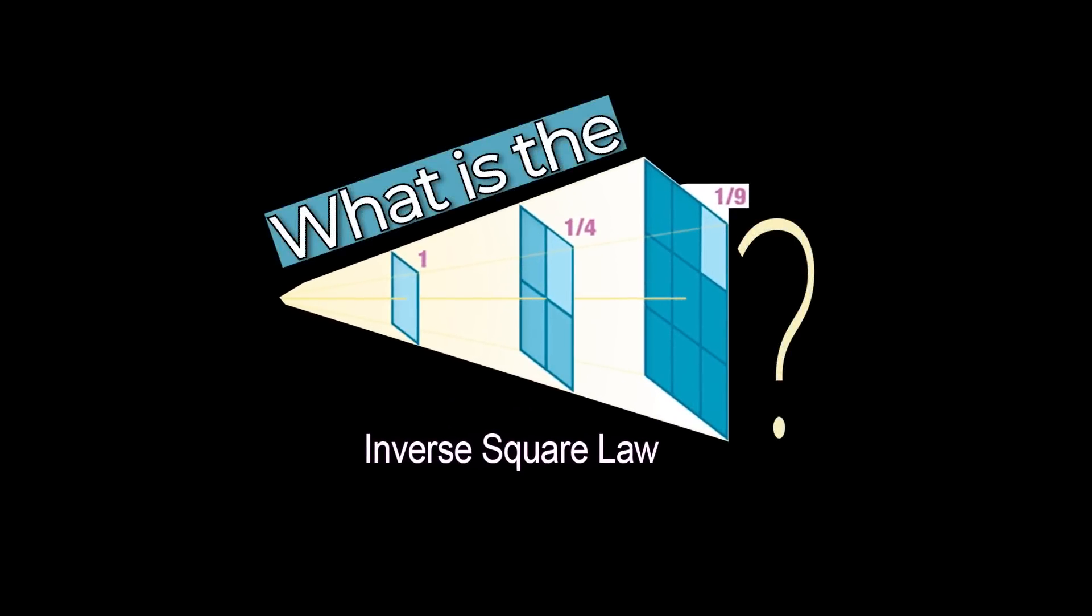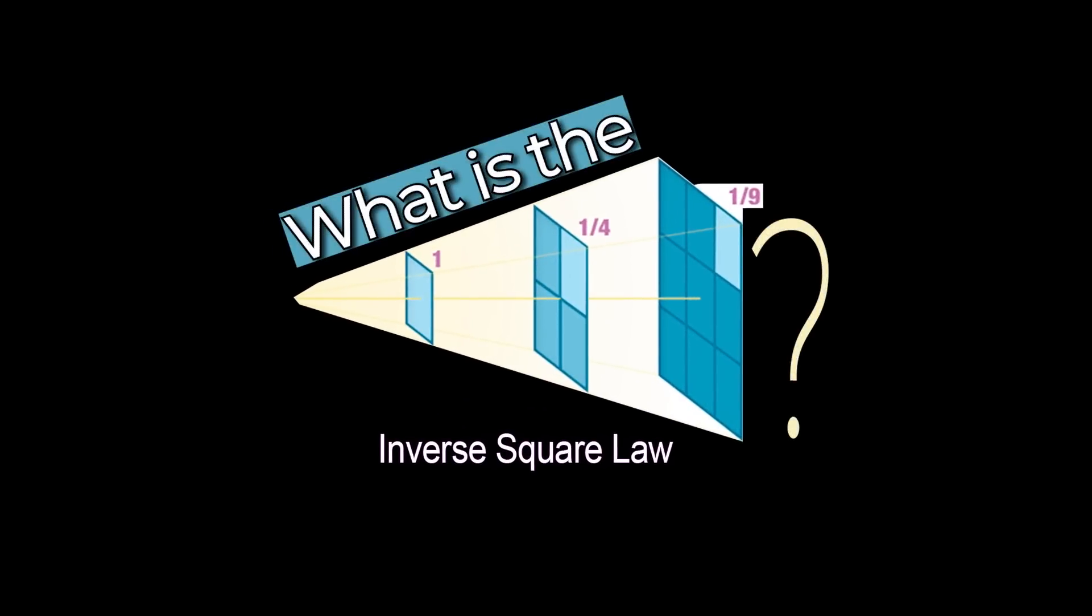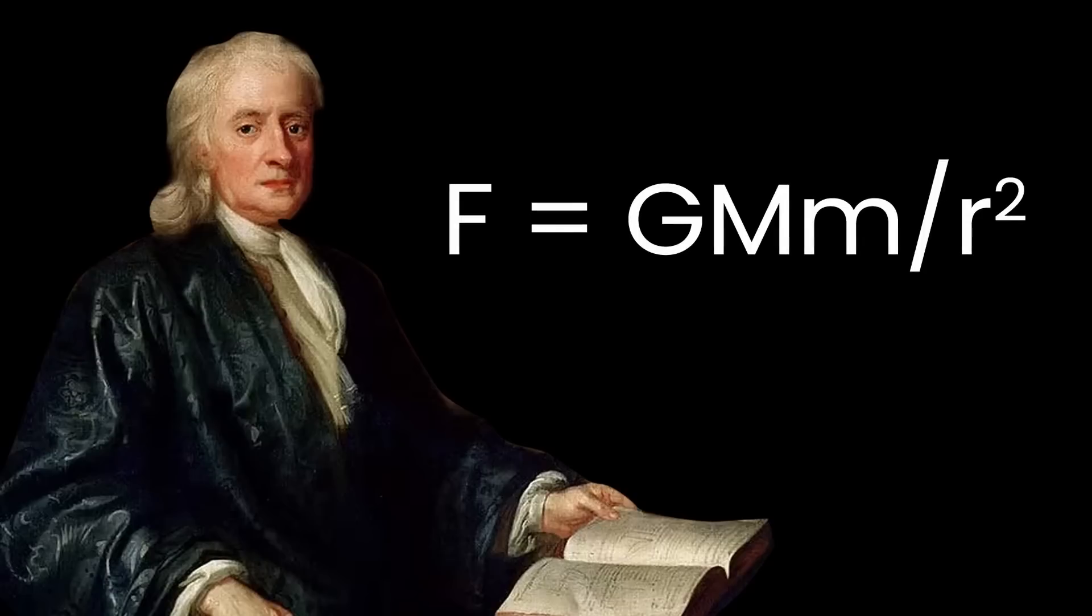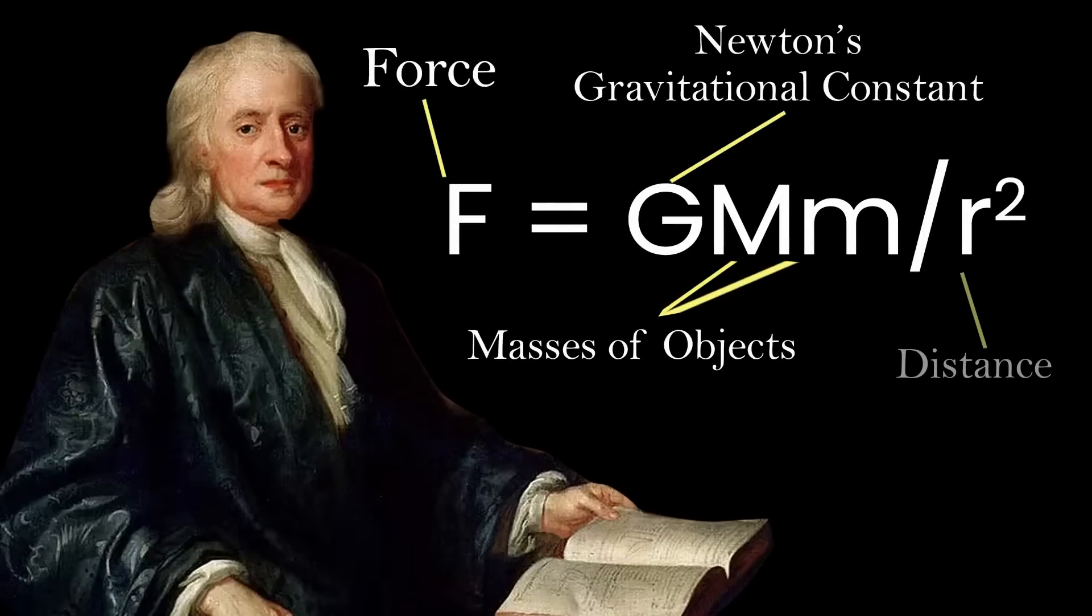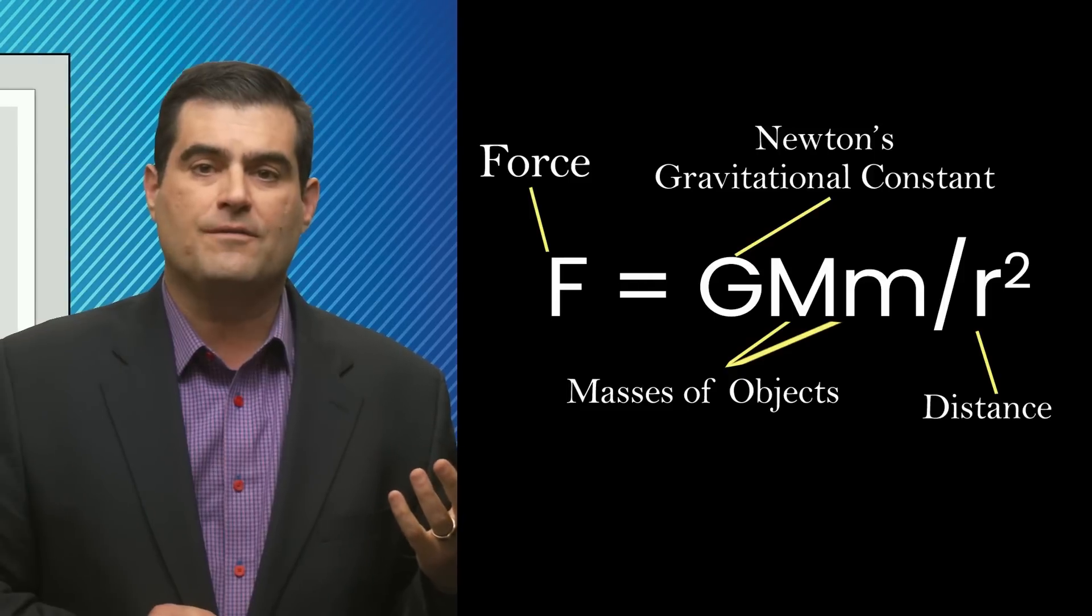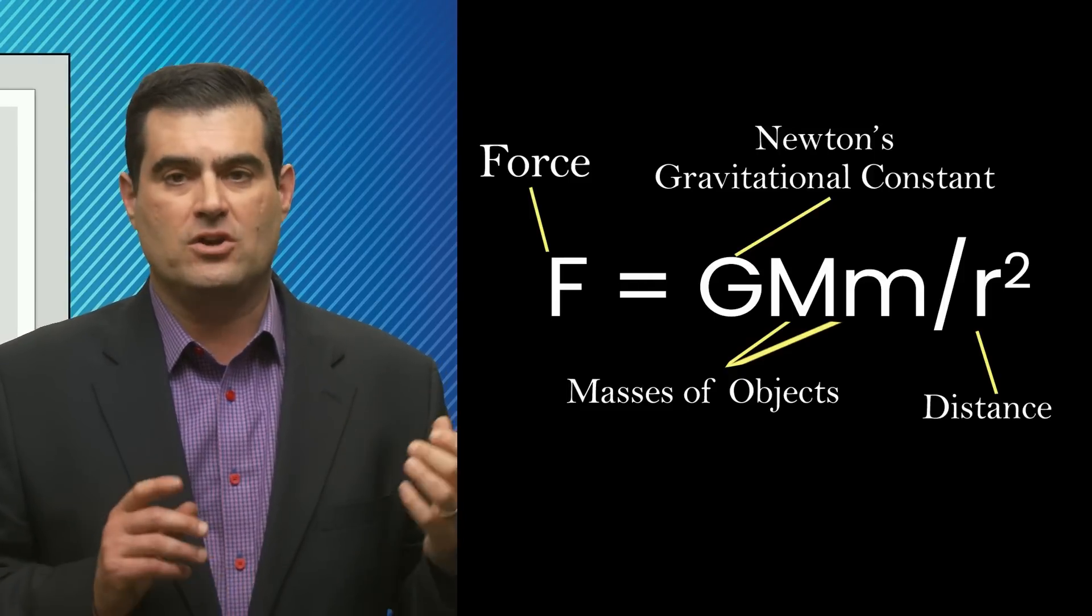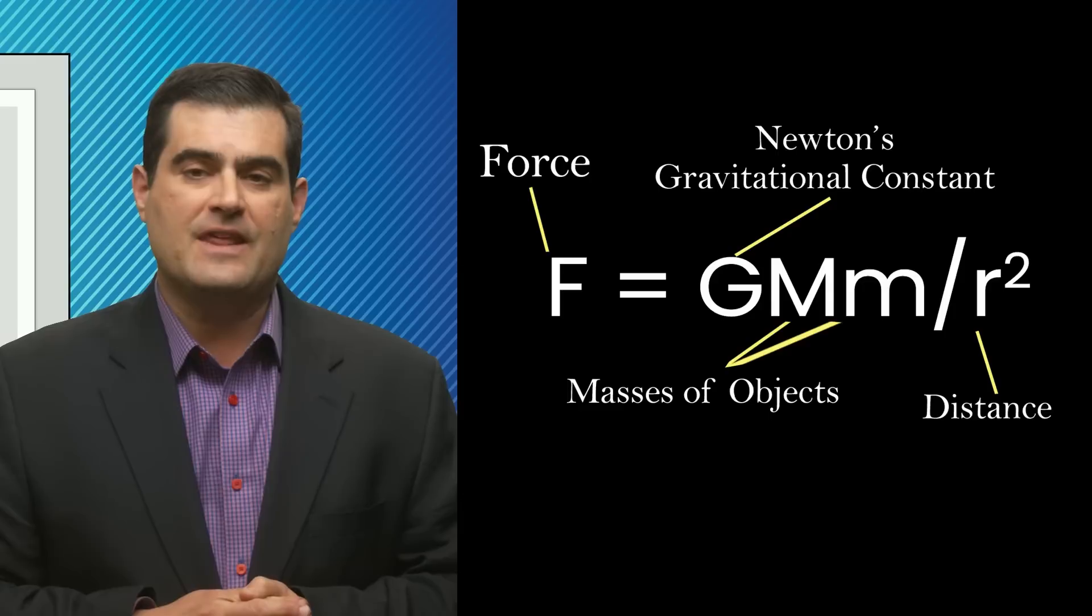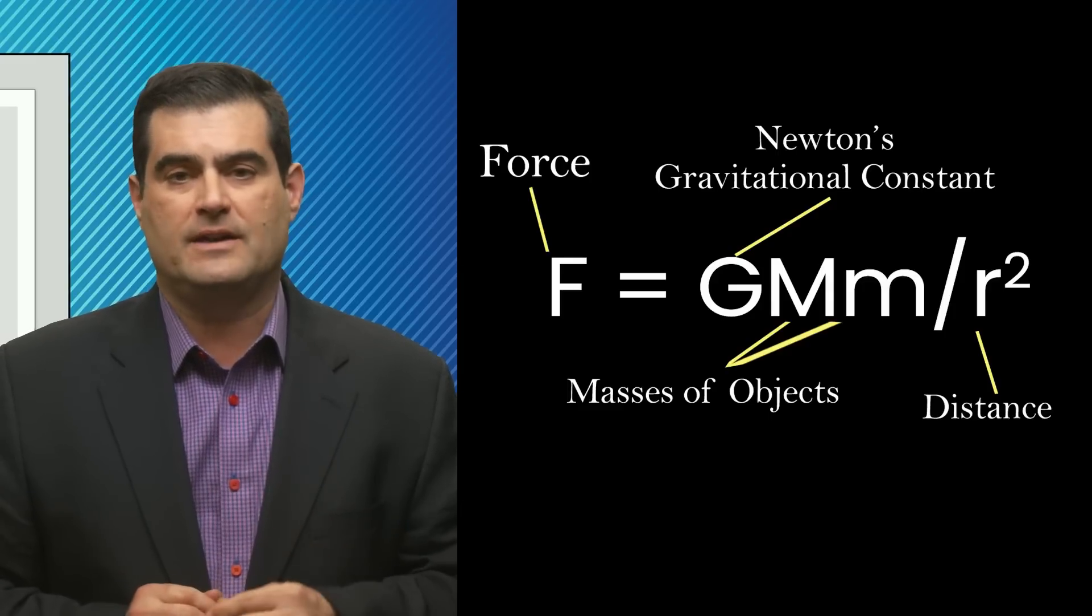So what is the inverse square law? That's merely the fact observed and encapsulated in Newton's famous equation that the gravitational force field between two gravitating massive objects depends on the product of their masses times a universal constant called capital G, Newton's constant, and the inverse of the square of the distance between them.